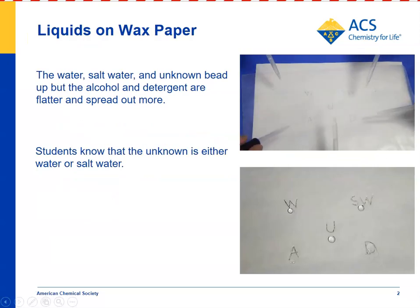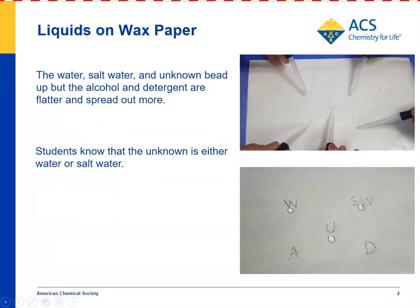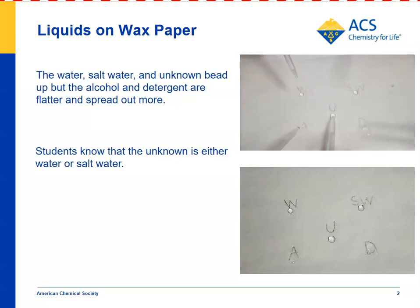The idea is that students will test the liquids on wax paper and on construction paper. Since these liquids are made of different molecules, they'll act differently on the different surfaces, and students can use the characteristic properties of how the liquids interact with the surface to figure out what the unknown is. Watching students put the liquids on the wax paper, you can see that the water, salt water, and the unknown all bead up, while the alcohol and detergent solution are somewhat flatter. Students can already use the wax paper test to eliminate alcohol and detergent as probably not the unknown.